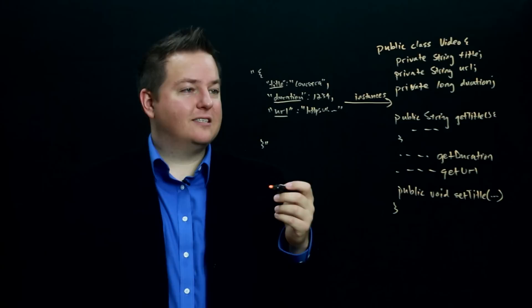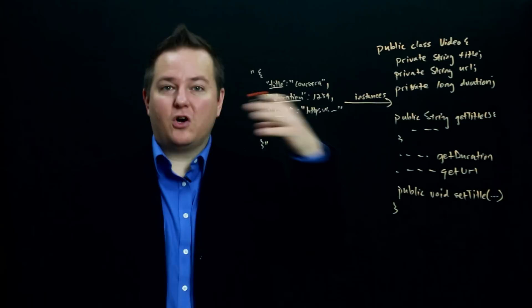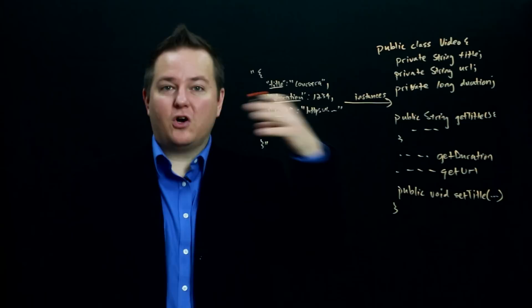And Jackson is what's sitting underneath the covers in spring, providing this ability to automatically take your response body from a controller method and turn it back into JSON. Or take JSON that's being sent as a parameter to a controller method and convert it into an object.